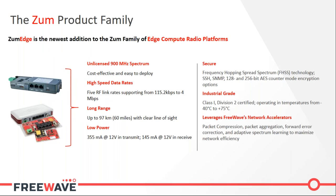The ZoomEdge is the newest addition to the Zoom product family of FreeWave, and as part of that line it has all the features common to the Zoom line — a FreeWave Z9 900 megahertz radio module with all the data security features common to that line. It is also built to operate in a rugged industrial environment, is C1D2 certified, and comes in a DIN rail mountable case.